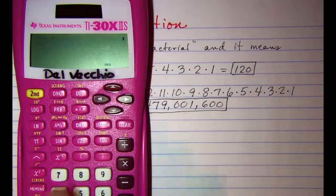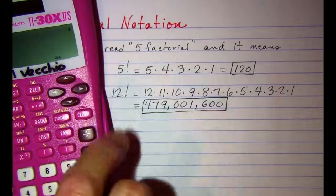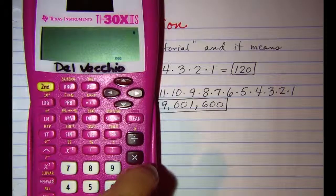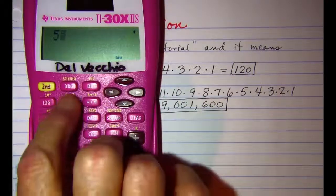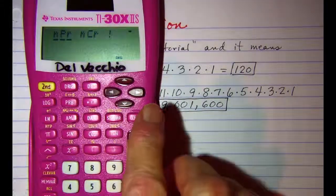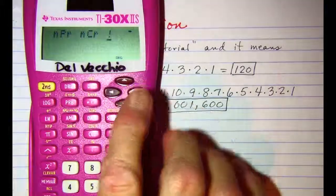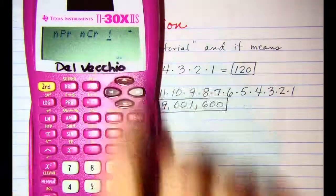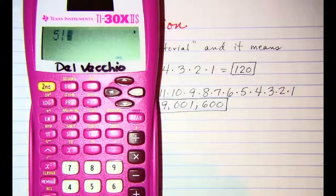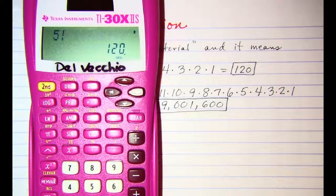If we wanted to do our 5 factorial, we would enter 5 and then hit our probability button, and our factorial is the third option. So 5 factorial then is 120.